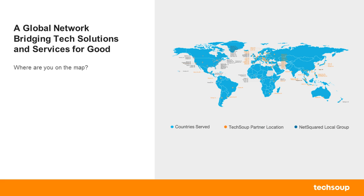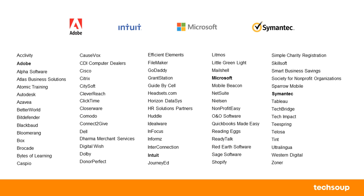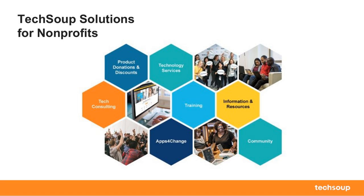A little bit about TechSoup before we get started. We are in 236 countries and territories and we serve over a million nonprofits around the world. We partner with several technology companies like Adobe, Intuit, Microsoft, Symantec, and several others — hardware and software — to make our mission possible, offering donated or discounted technologies. We also offer several other things outside of hardware and software like tech consulting, apps for change, TechSoup courses, cloud consultancy, and several other service offerings as well.